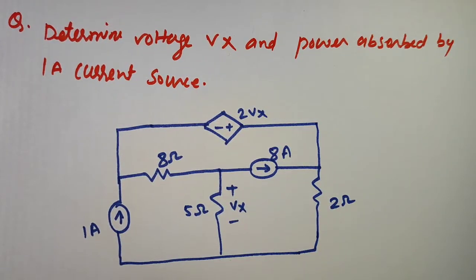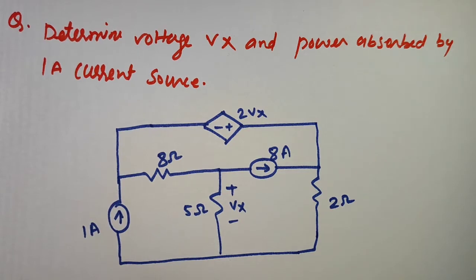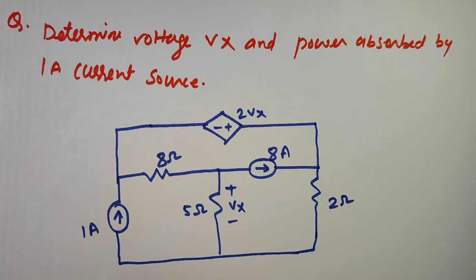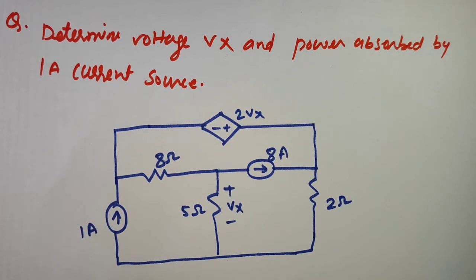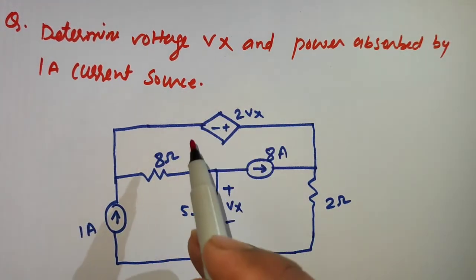Hello, my dear viewers. Welcome to my channel. Today we are going to discuss a problem related to a dependent source, in which we need to determine voltage Vx and the power absorbed by the 1 ampere current source. Before going to discuss this problem, I request you all to please subscribe to my channel for latest updates and press the bell icon. So let's find Vx and the power absorbed by the 1 ampere current source.